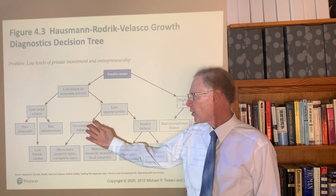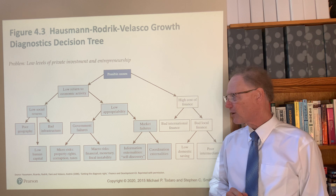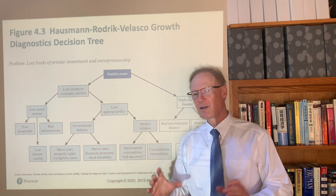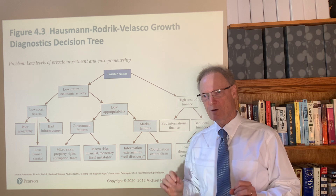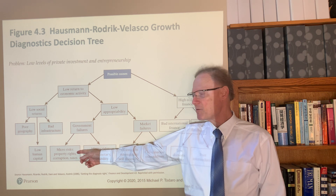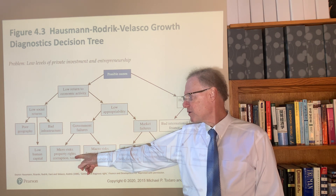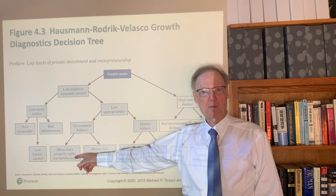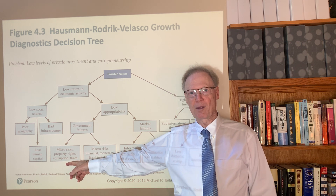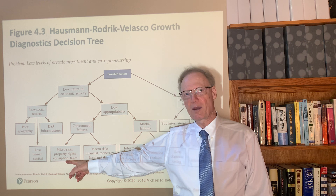There is also low appropriability, which falls into two categories: government failures and market failures. With respect to government failures, the authors set out micro risks and macro risks as the two areas of key interest. For micro risks, we see problems of poor institutions — property rights may not be sufficiently strong to safely invest, which may be holding back investment. Corruption and the ability to demand bribes can cut into the return on investment quite clearly, and could therefore be a binding constraint.